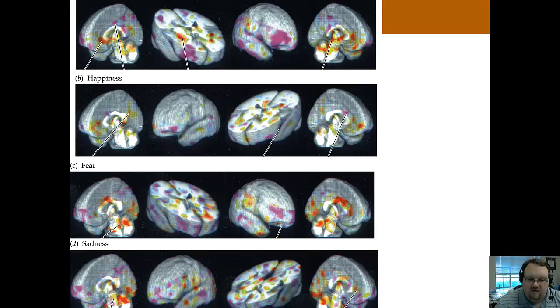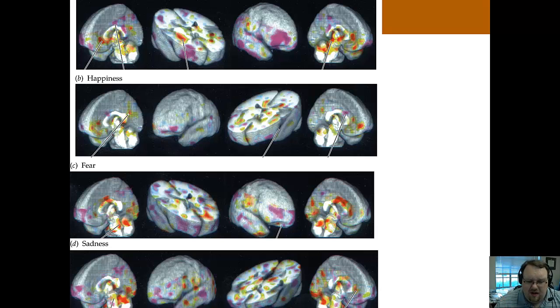These images show brain activation during sadness, happiness, anger, and fear, and you can see that there are many brain regions involved.